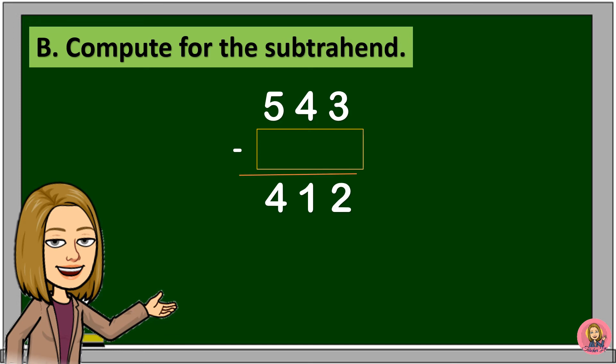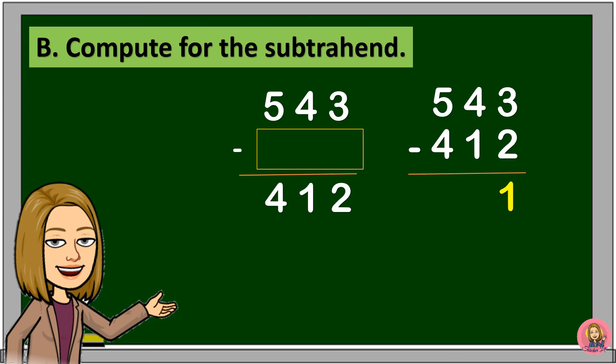Again, if we compute for the subtrahend, we will subtract the difference from the minuend. 3 minus 2 is equal to 1. 4 minus 1 is equal to 3. And 5 minus 4 is equal to 1. Therefore, the subtrahend is 131. If we subtract 131 from 543, the difference is 412.